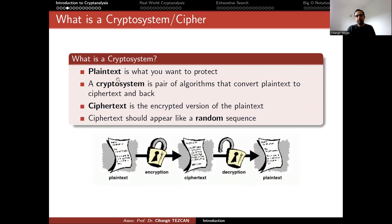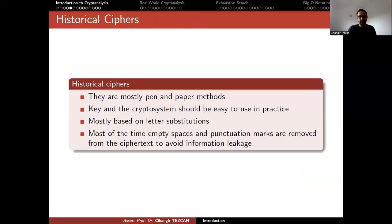So let's recall. Plaintext is what we want to protect. A cryptosystem is a pair of algorithms that convert plaintext to ciphertext and back. And ciphertext is the encrypted version of plaintext. And ciphertext should appear like a random sequence. So you have the plaintext. You convert it into ciphertext using a secret key. Send it to the person you want to communicate. They have the same secret key so they can decrypt it and obtain the plaintext. So this is what a cipher or a cryptosystem is defined.